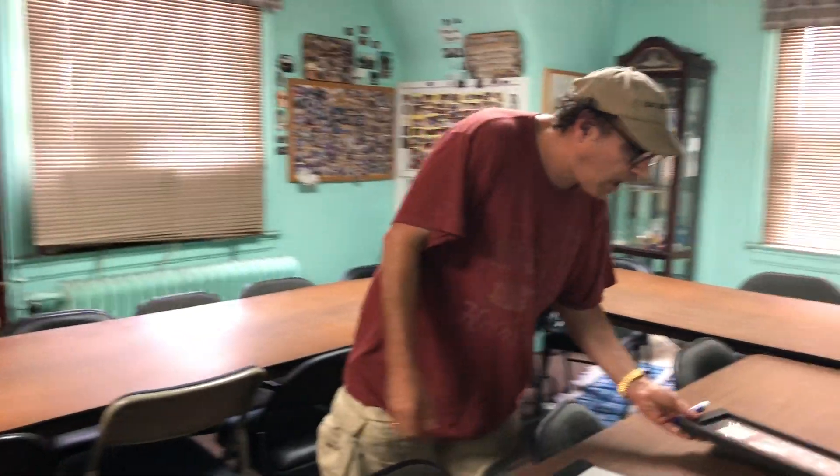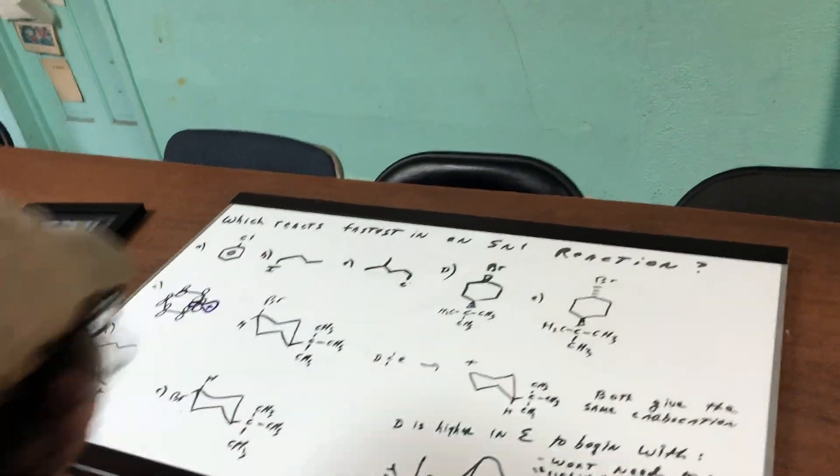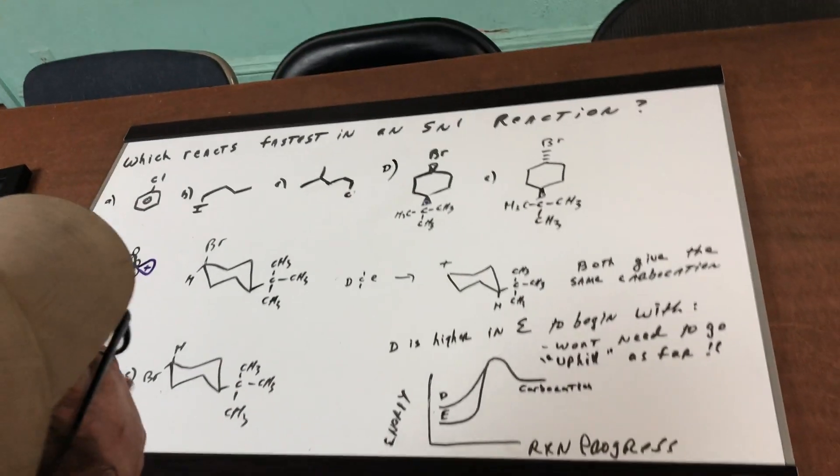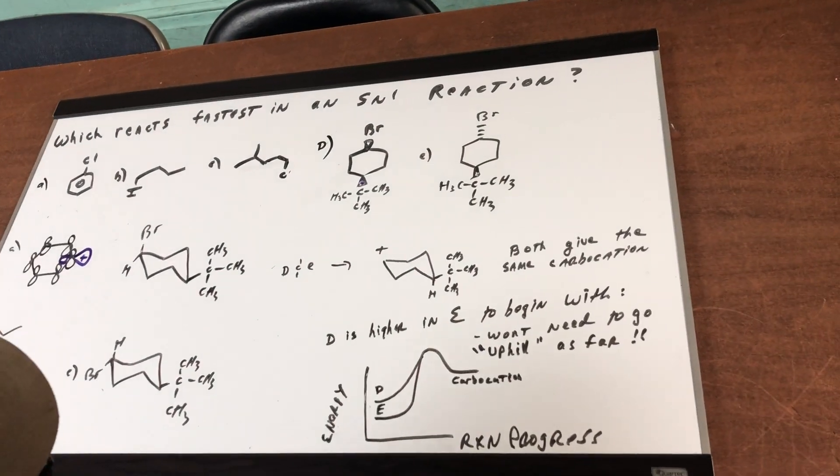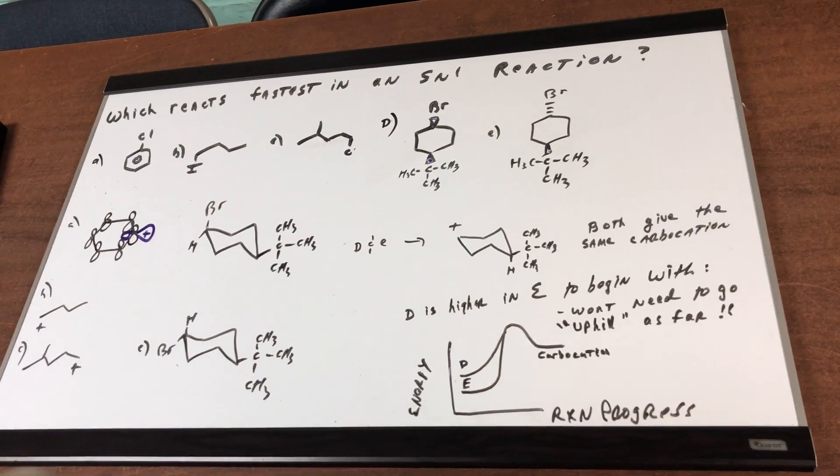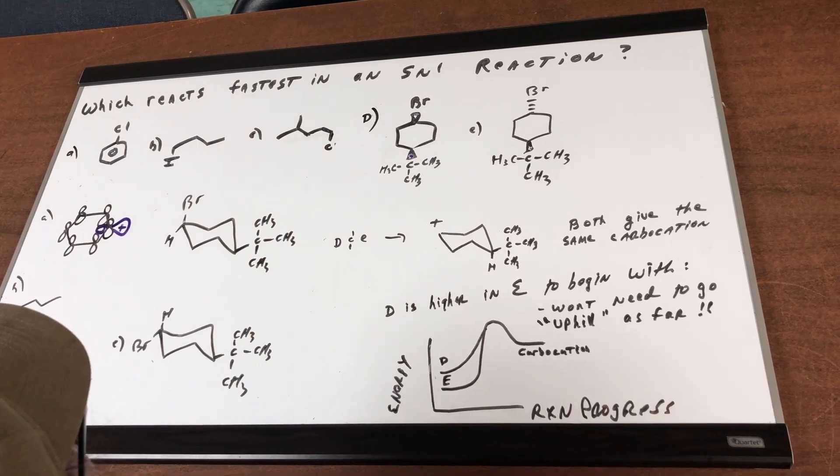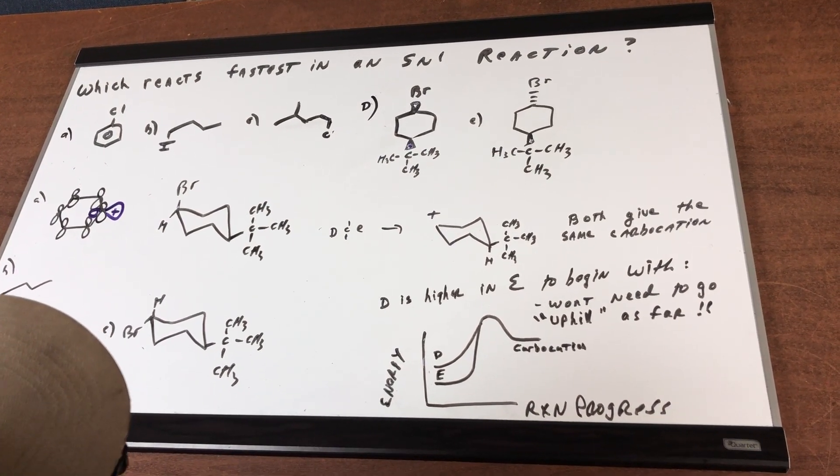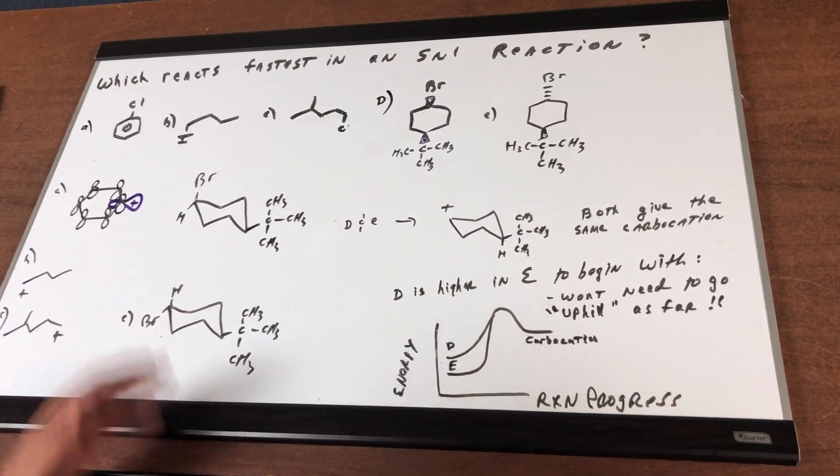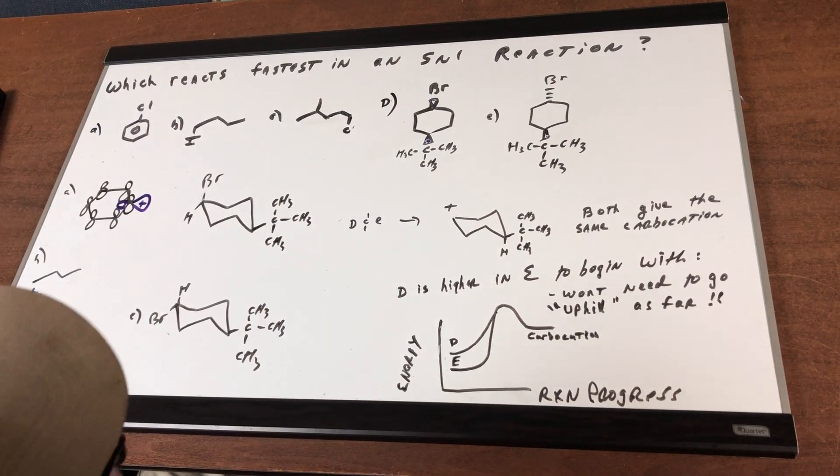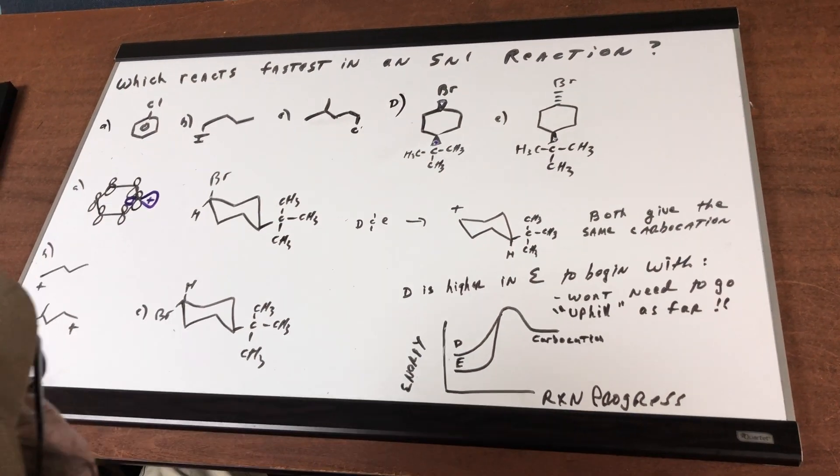All right, come around, let's have a look at a really great reaction. I want to know which reaction occurs fastest in an SN1 reaction. Well, in an SN1 reaction, the first thing we're going to do is form a carbocation. Now we're going to go through each one and see what kind of carbocation can be formed.